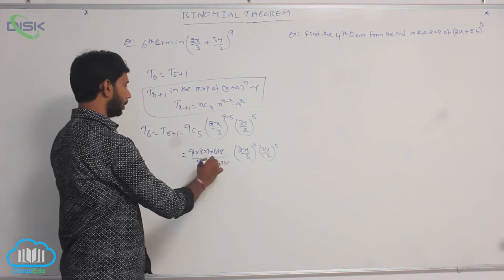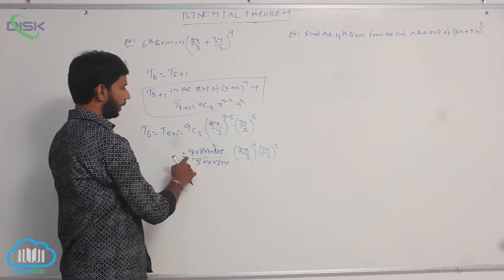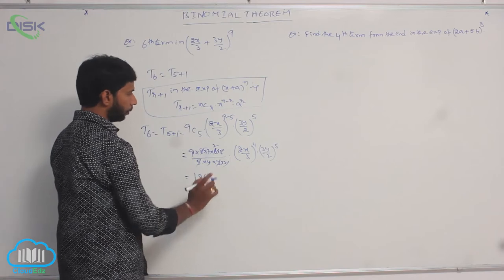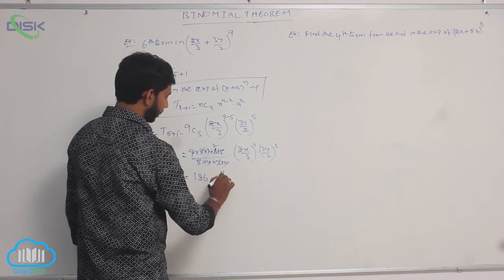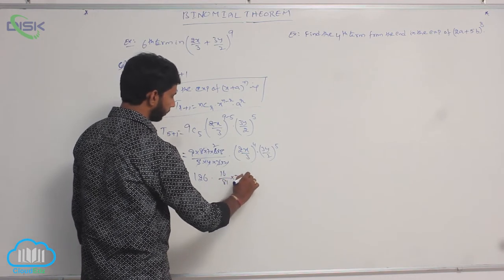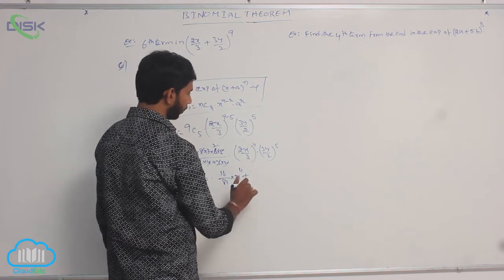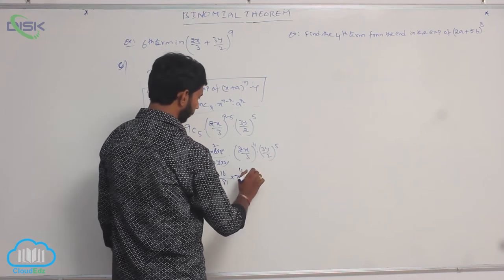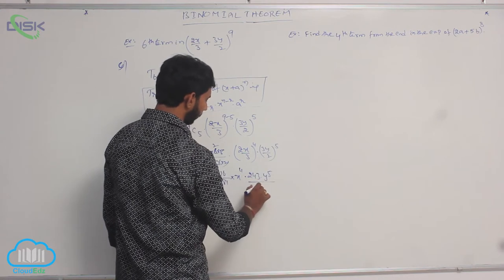After cancellation: 5 cancels with 5, 4 × 2 = 8 cancels, and 3 × 2 cancel. We get 9 × 7 = 63, then 63 × 2 = 126. So 126 · (16/81) · x^4 · (243/32) · y^5.